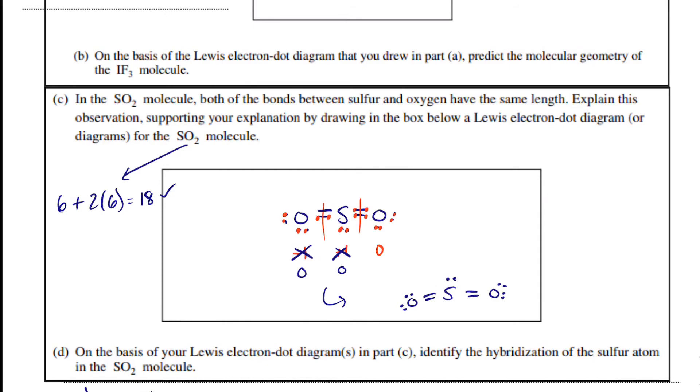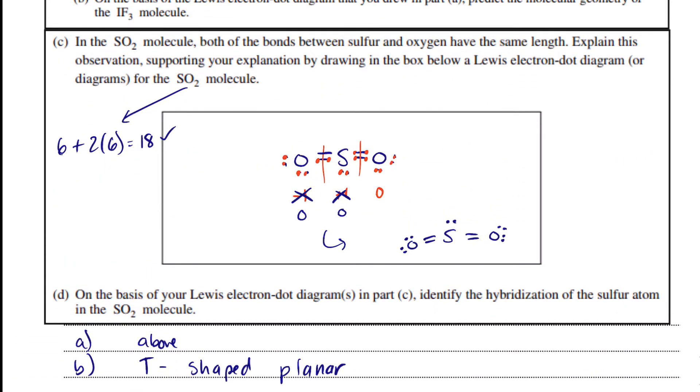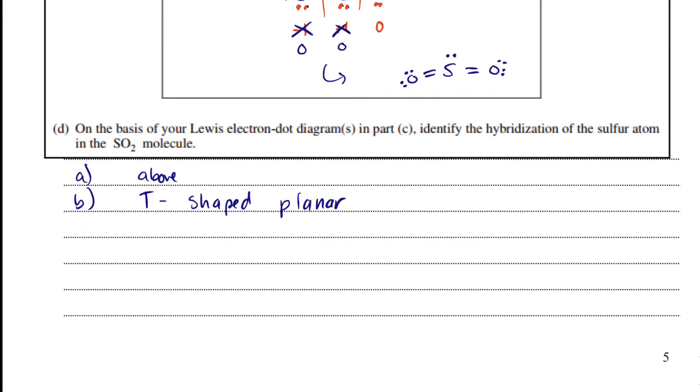So we need to answer the question, and the question was, why does the sulfur-oxygen bond have the same length? So I think the structure does a good job of explaining why.